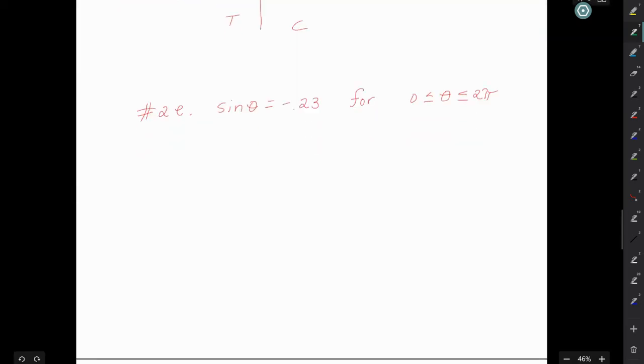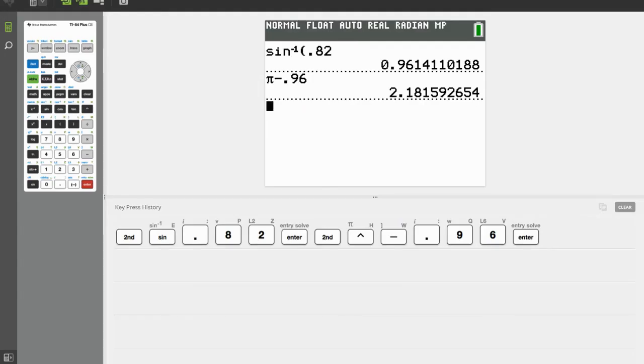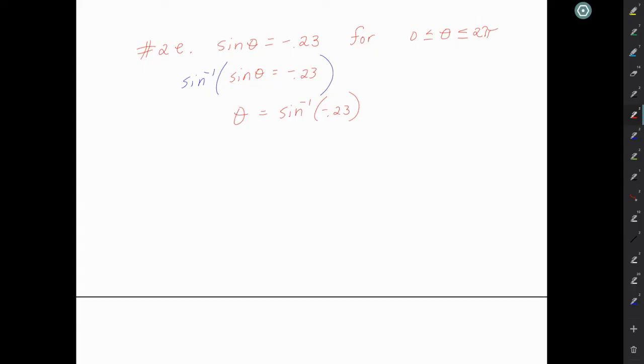Let's look at 2E on that worksheet. And this time, sine of theta equals negative 0.23. We're still looking between 0 and 2π, but we have a negative value. So we're going to take the inverse sine of both sides. When we do that, on the left side we get just theta, and on the right side we get the inverse sine of negative 0.23. Put that in the calculator, and we get a value of negative 0.23.